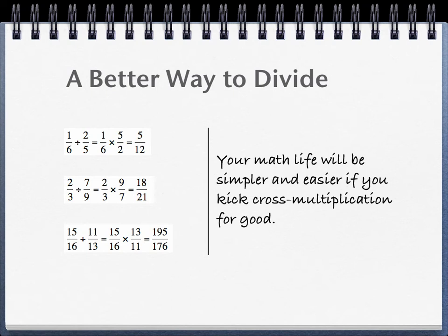So we're going to go back to the examples that we used for when you can cross multiply, and I'm going to show you how to do those without cross multiplying. The first example was 1 sixth divided by 2 fifths. So instead of cross multiplying, we can just take 1 sixth times the reciprocal of 2 fifths. So 1 sixth times 5 halves, and that's equal to 5 twelfths, which you'll notice is the same answer as we got when we cross multiplied.